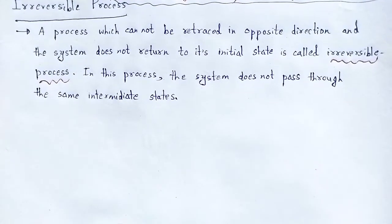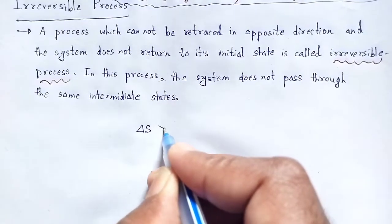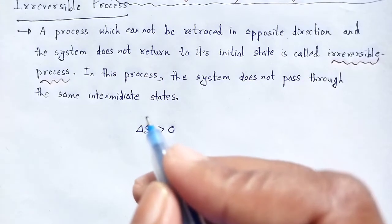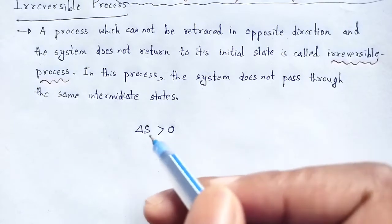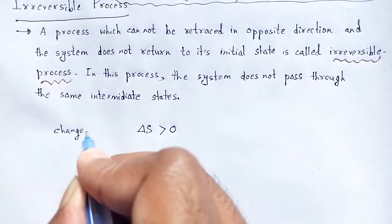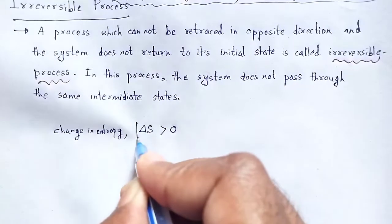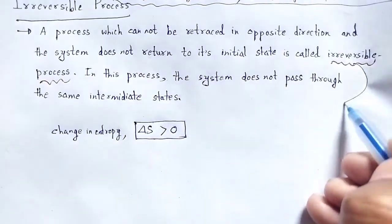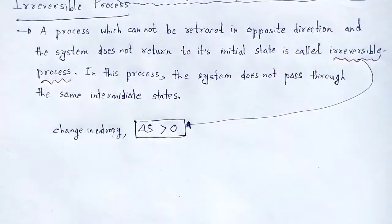In an irreversible process, the change in entropy ΔS is greater than zero, meaning the entropy of the system always increases — the degree of randomness always increases. So ΔS > 0 for an irreversible process.